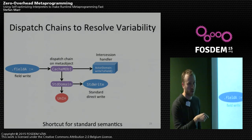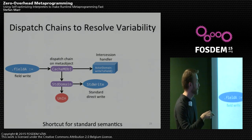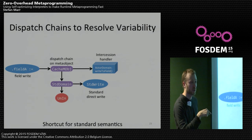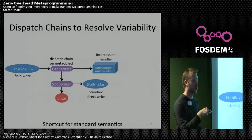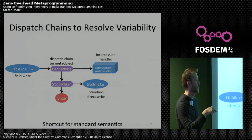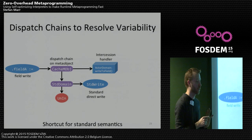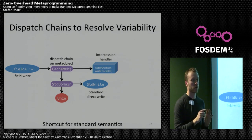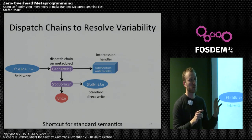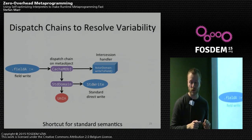Interestingly, it's a very generic abstraction. If we only have standard language semantics and haven't used any fancy stuff, we can really just directly do the write. So in the end there's supposed to be no overhead in the system if you don't use the fancy meta-object protocol stuff.